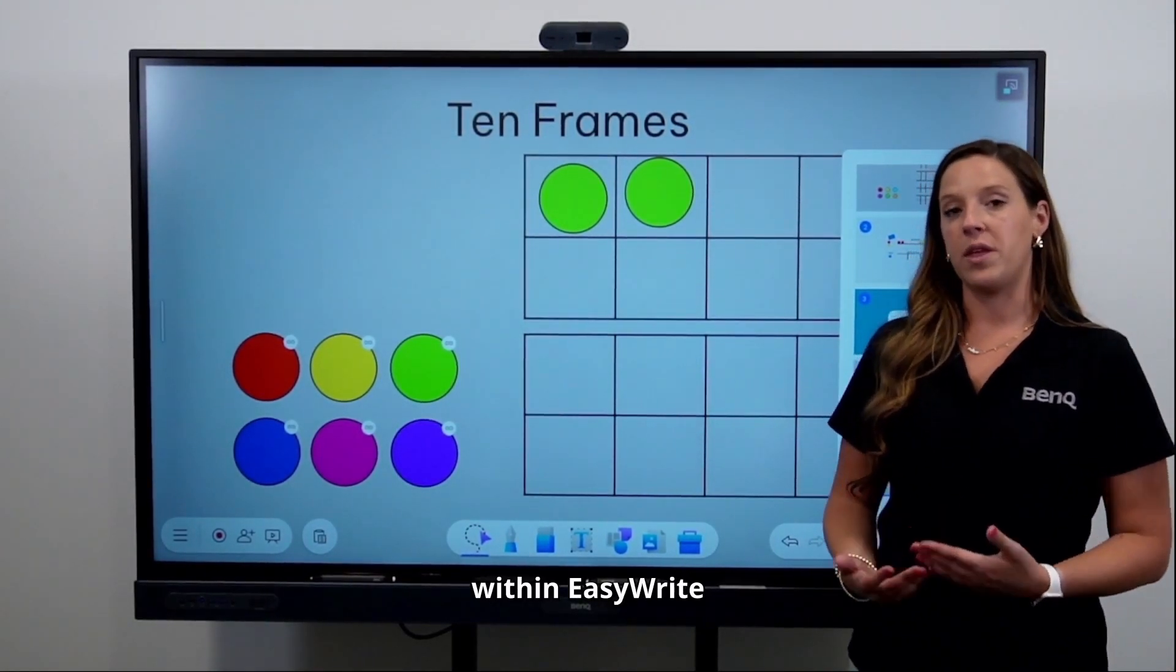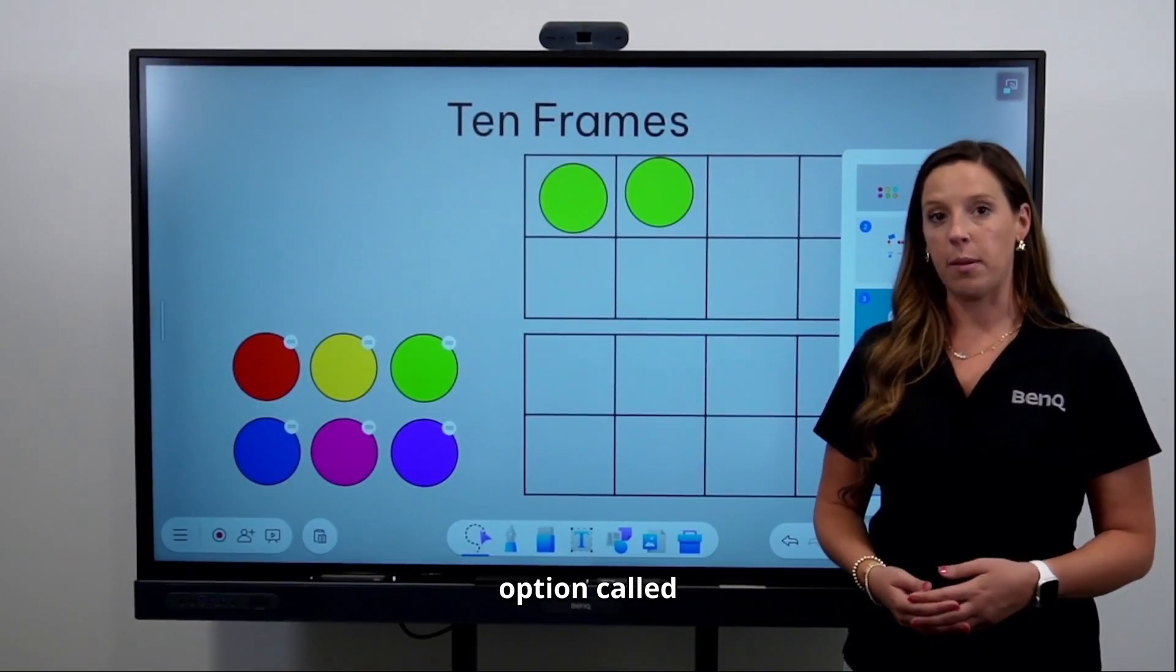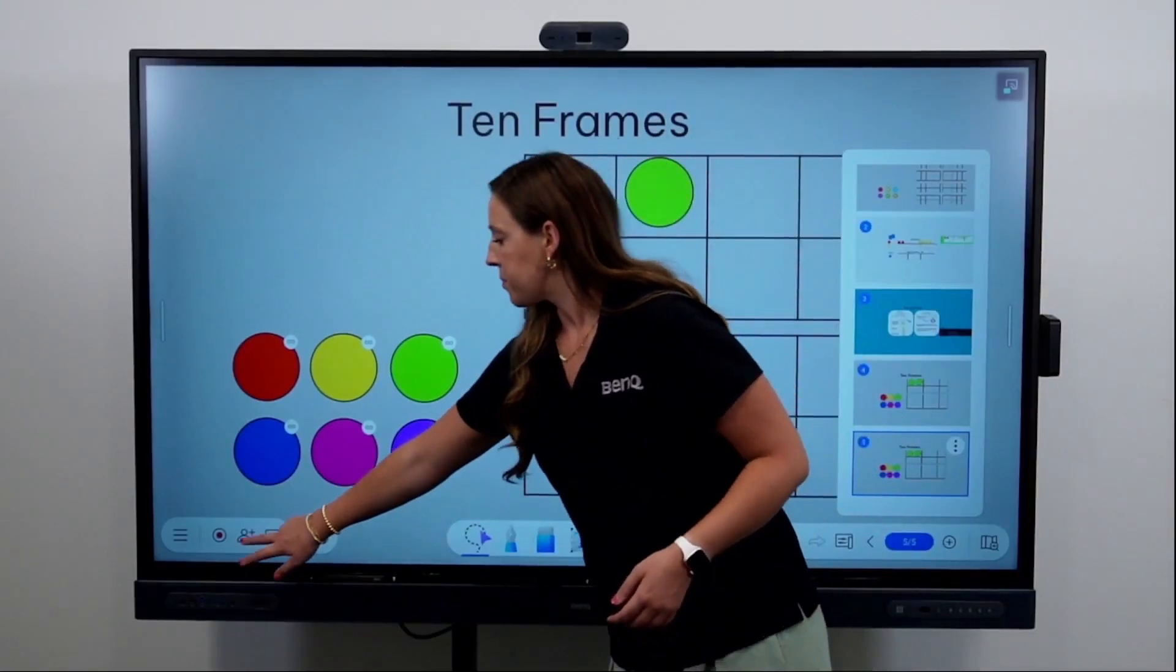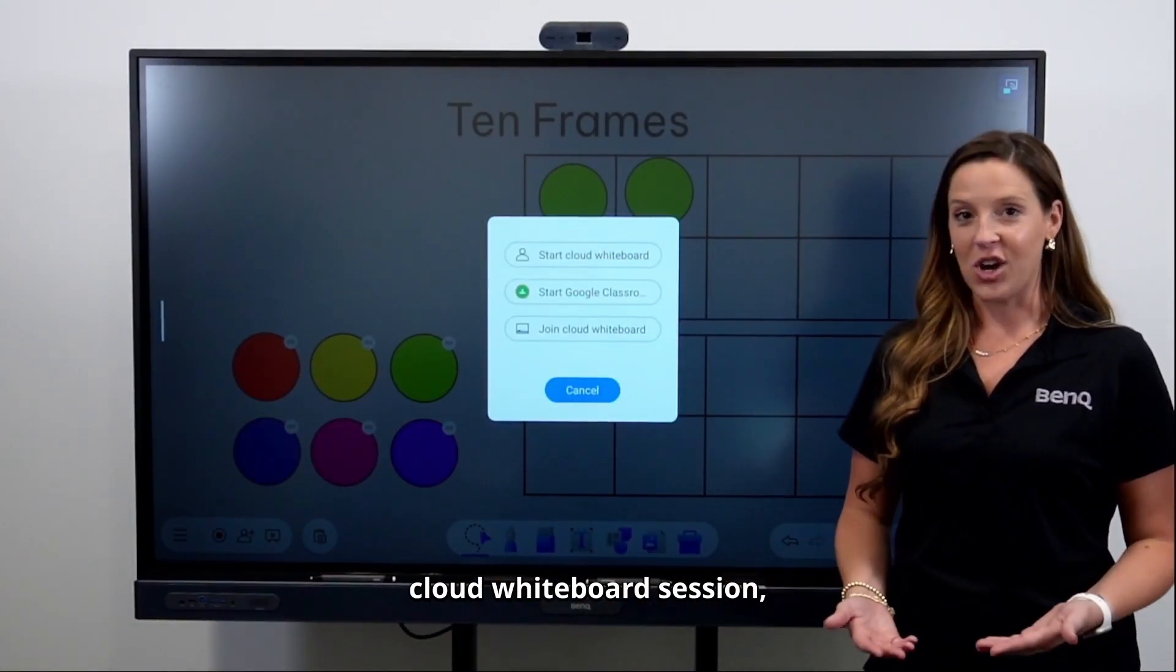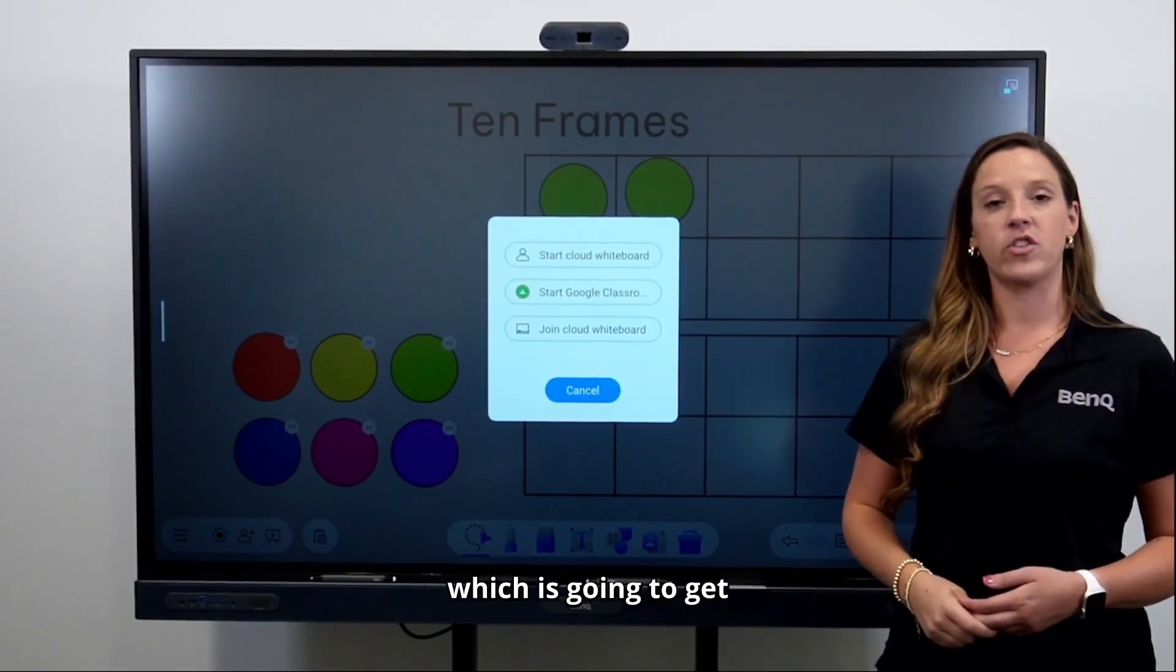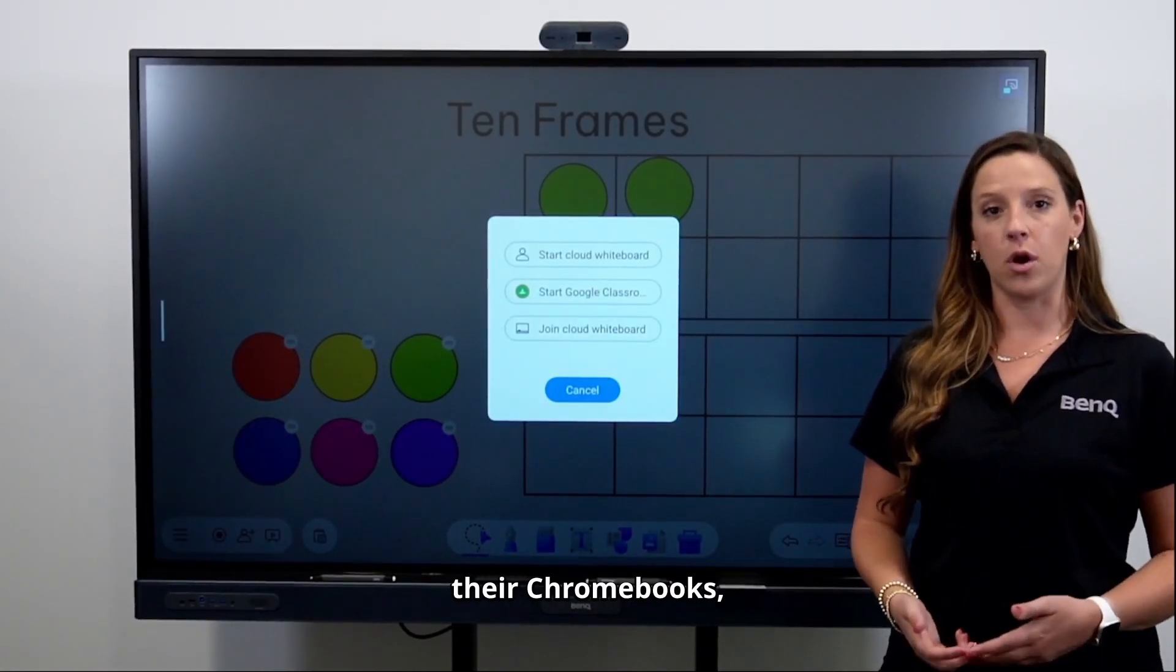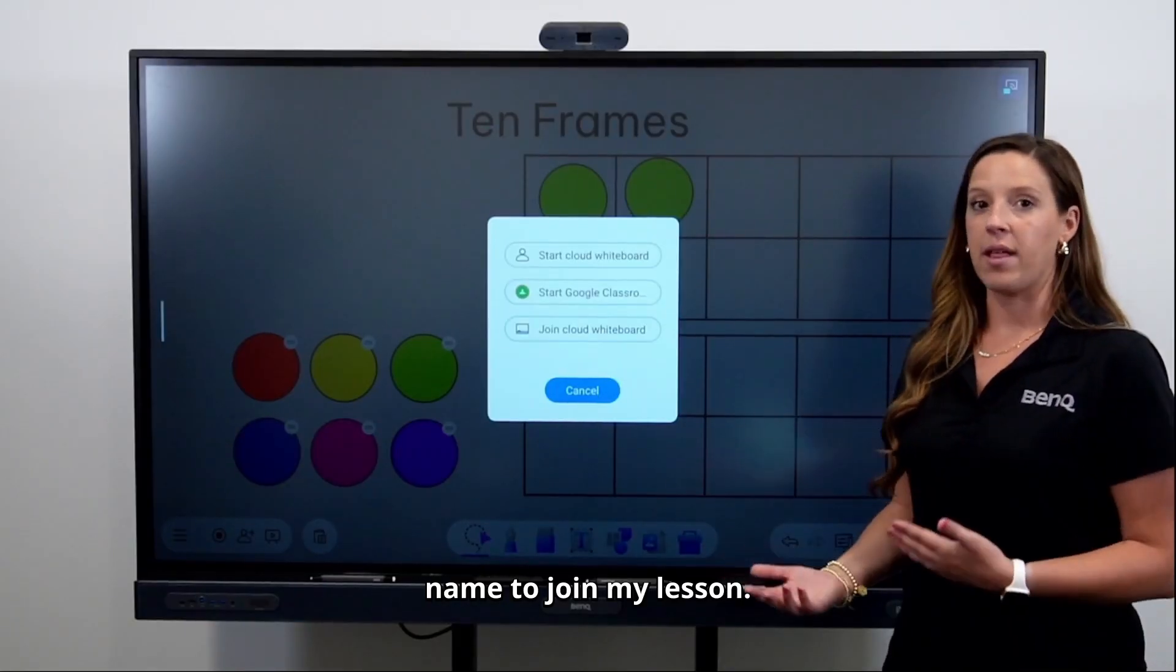Another resource within EasyWrite that is great for student engagement is our collaborative option called Cloud Whiteboard. I can start a Cloud Whiteboard manually from the board, which is going to give a QR code that students can easily scan from their iPads or Chromebooks, and it will prompt them to type in their name to join my lesson.